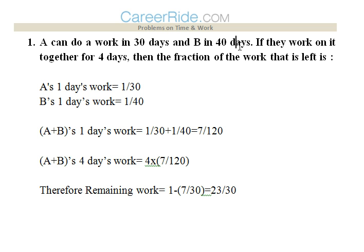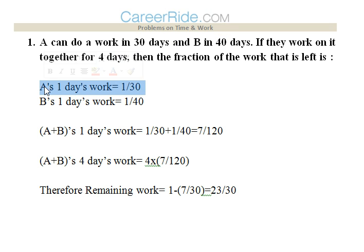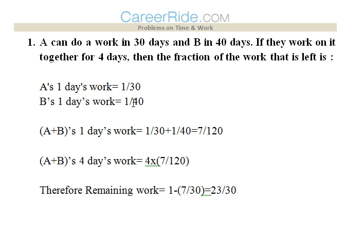First question: A can do a work in 30 days and B can do a work in 40 days. If they work on the same work for four days, the fraction of the work that would be left — A's one day work would be 1/30, B's one day work would be 1/40. So A plus B's one day work would be 1/30 plus 1/40, that is 7/120.